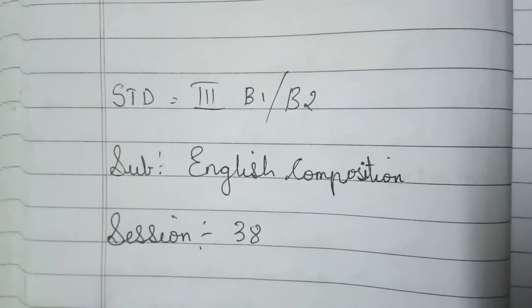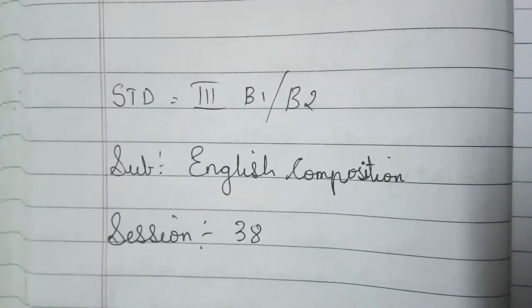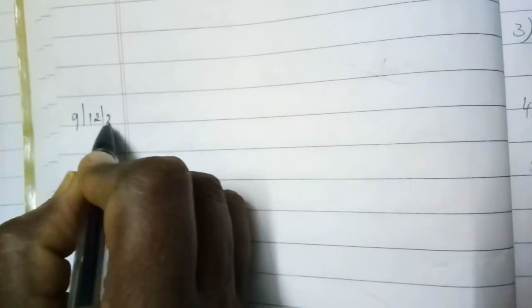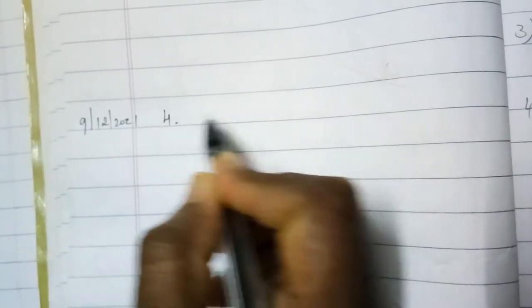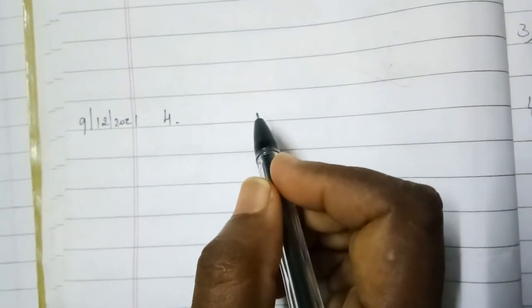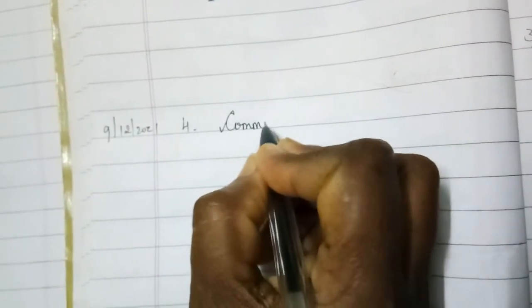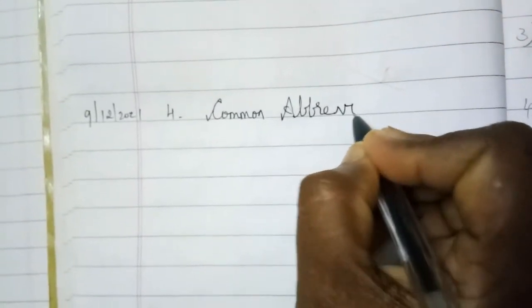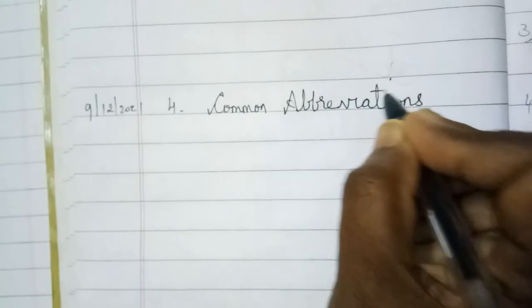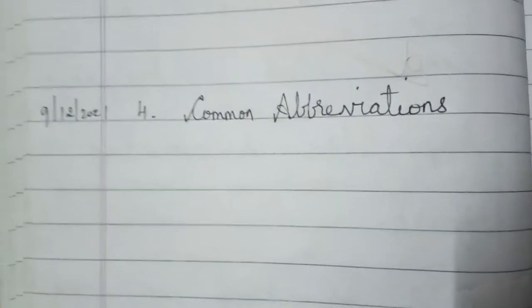Children, take your English composition book and first write the index. First take your index column and write first date. Write date 9-12-2021 and I think your exercise number. I think this is exercise 4 and in subject you write common abbreviations. Write common abbreviations, A-B-B-R-E-V-I-A-T-I-O-N-S. Write first.